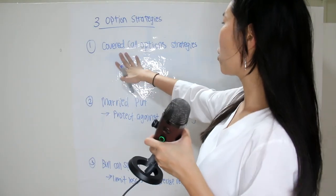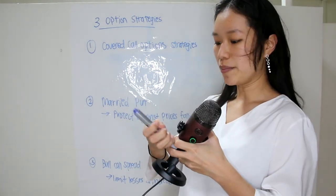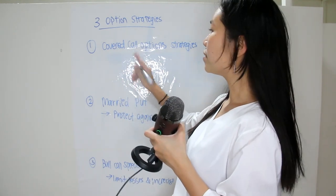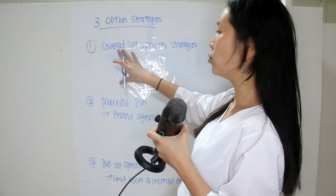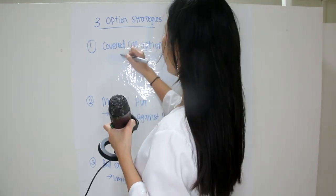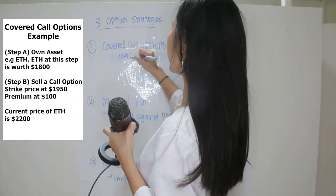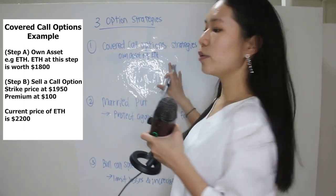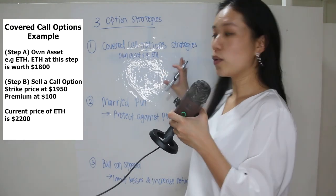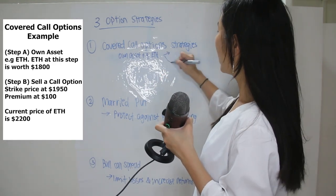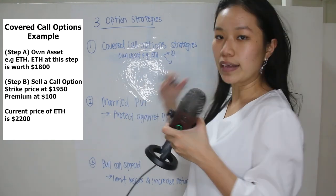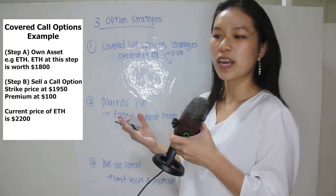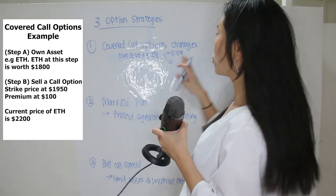The first strategy is called the covered call option strategy, and as the name suggests, it involves a call option. Who uses this? People who own the asset — let's say ETH. In the crypto space, we have two types: people who just have ETH as an investment and are keeping it because they're worried about volatility.